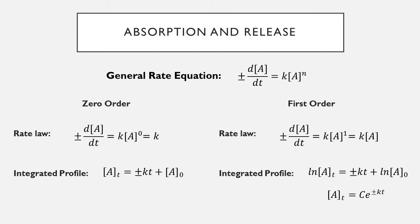Integrating the zero-order rate profile gives concentration as a function of time equal to plus or minus k times time, plus the starting concentration — often zero for a simplified equation. First order (n=1) and second order (n=2) are very commonly seen as alternatives to zero order. These are typically what you see in elimination from the body and diffusion-based drug release from delivery systems.